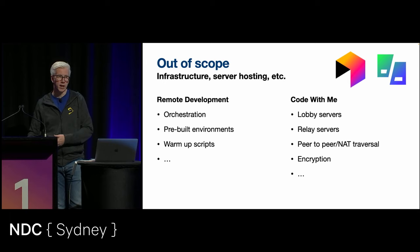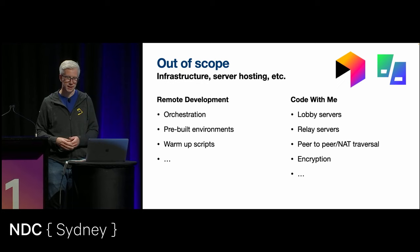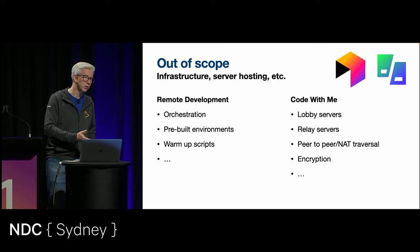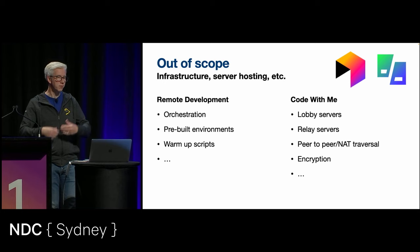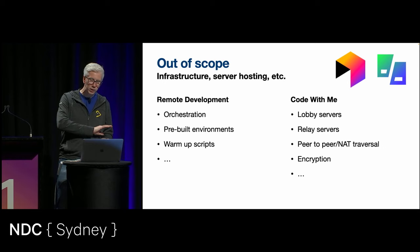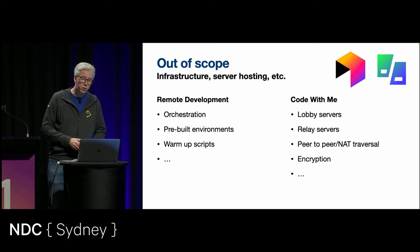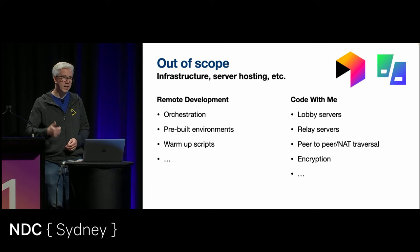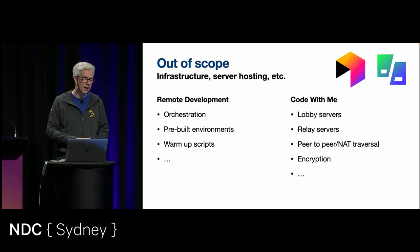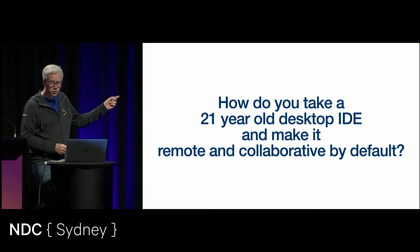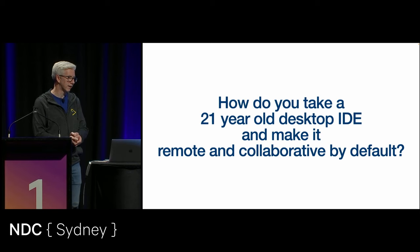On top of that, you can have orchestration — you can build your own environments with pre-built toolchain dependencies already there. You can have warmup scripts to get the latest version from source control, warm up the IDE, do all the indexing, download everything, compile everything — so when you start up your environment, you're really ready to go without waiting for anything. Code With Me has a bigger server-side thing: lobby servers to set up a session, relay servers for peer-to-peer or NAT traversal connections, and encryption. But I'm going to concentrate on this: how do we take a 21-year-old desktop IDE and make it remote and collaborative by default?